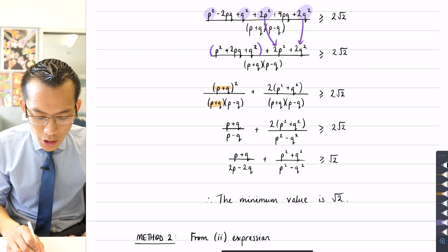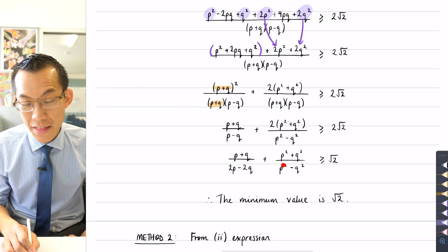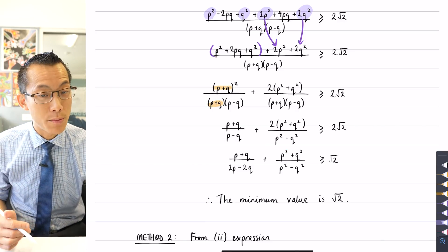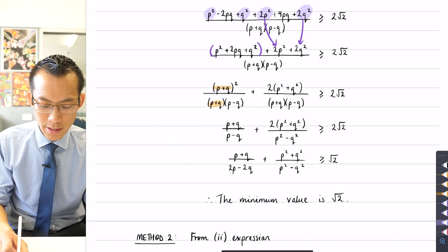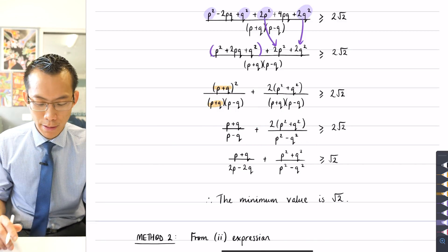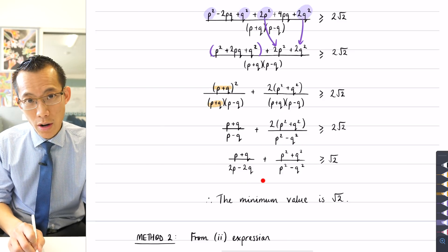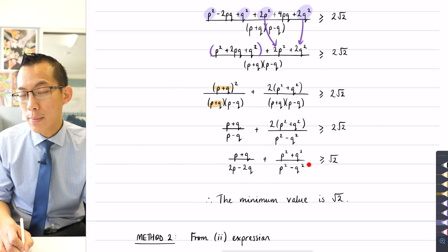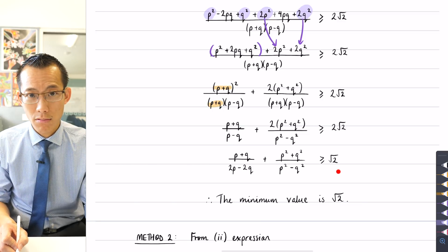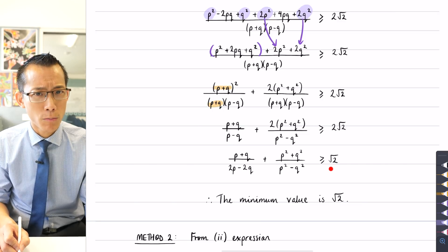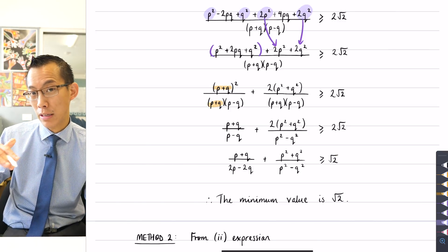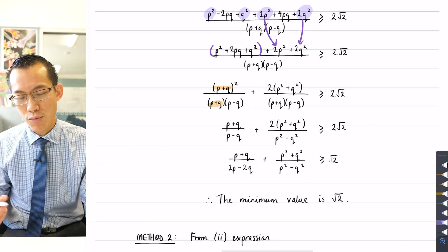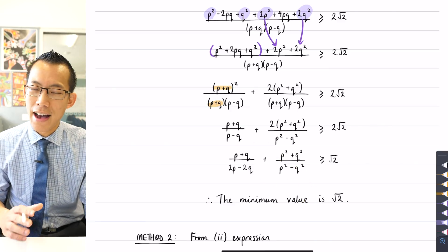To go from the simplified line to the final result I divide back through by 2 — so multiplying by 2 earlier made the algebra cleaner but the divide-by-2 step brings it back. Because this is the expression we're minimising, the inequality tells us the whole expression is greater than or equal to √2. Therefore √2 is the lowest it can possibly go — the minimum possible value of the expression is √2.